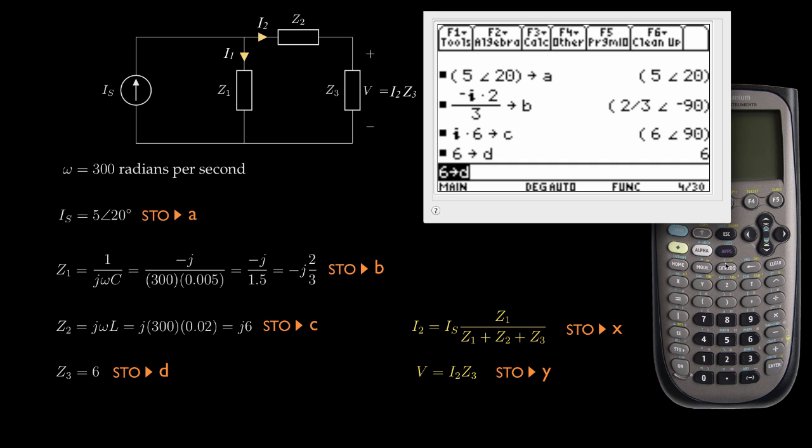Now I'm going to compute the current I2, and that is IS, which is stored in A, times Z1, which is stored in B, divided by Z1 plus Z2 plus Z3, which are stored in B, C, and D. So this will be A times B, which is Z1, divided by B plus C plus D—Z1 plus Z2 plus Z3. And I'll store that in the variable X.